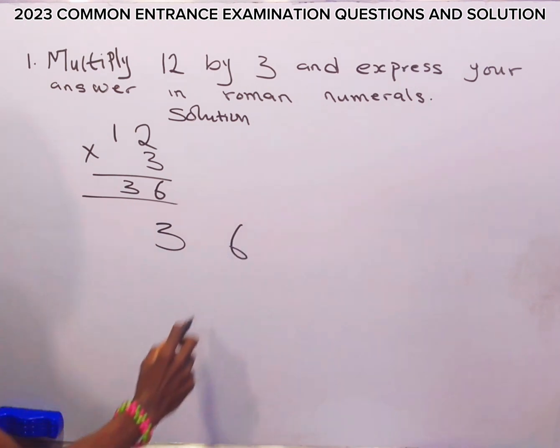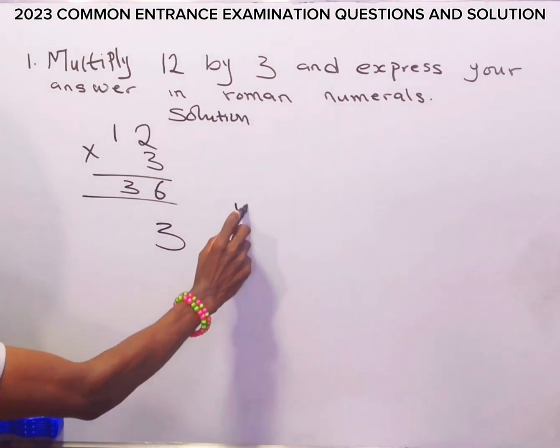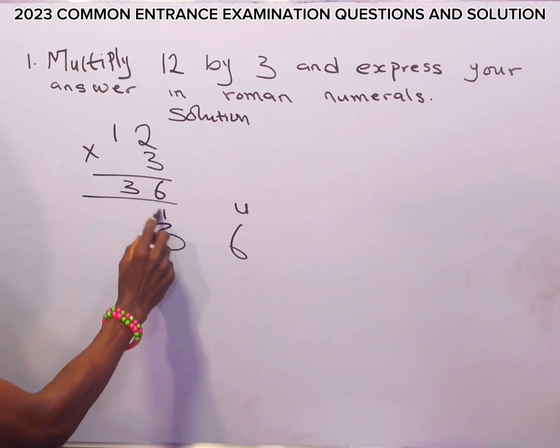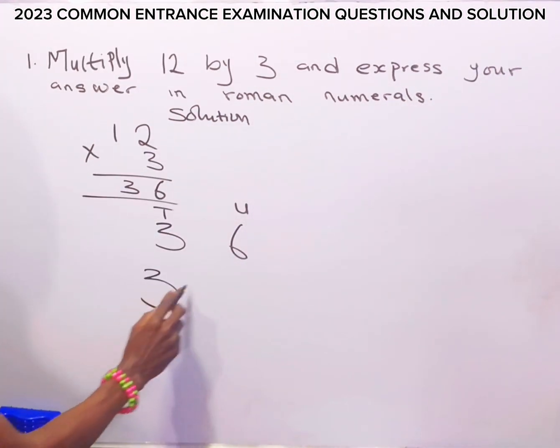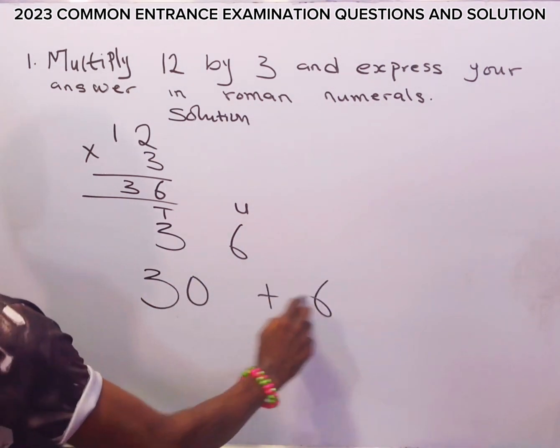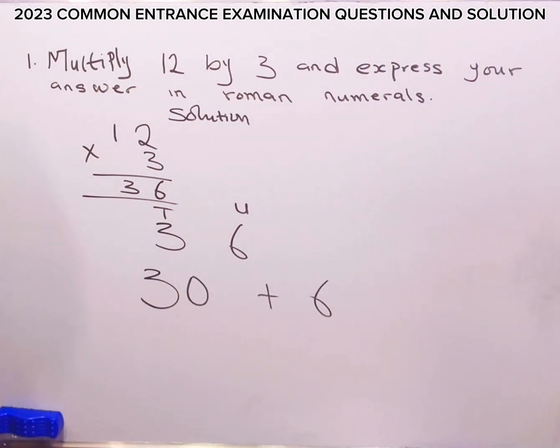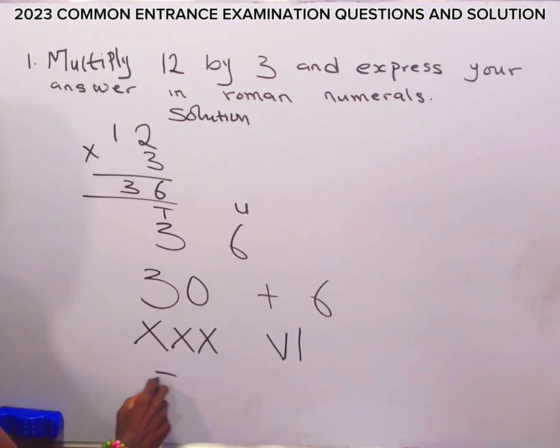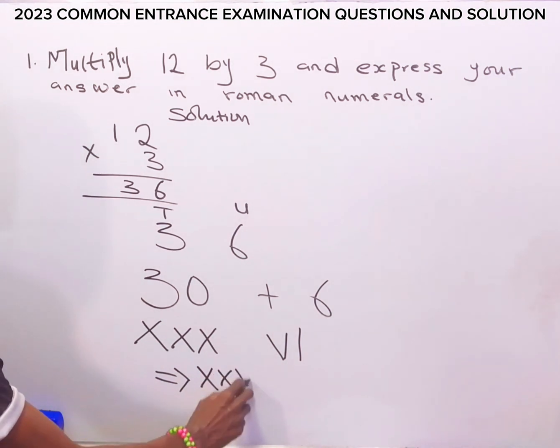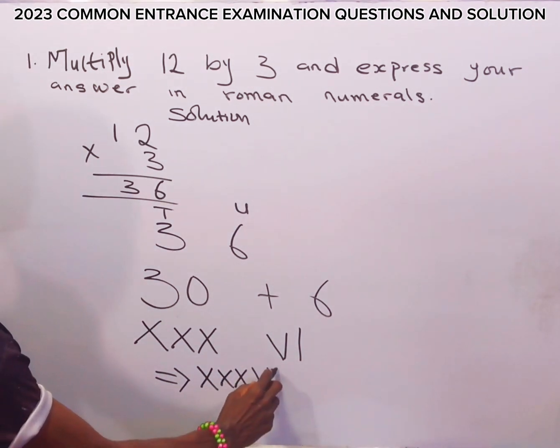Now to write this in Roman numerals, let's consider 36. The place value of 6 here is units and the place value of 3 here is tens. Therefore, for us to get 36, it is 30 plus 6. Now how do we express 30 in Roman numerals? 30 in Roman numeral is X, X, X and 6 in Roman numeral is V, I. So when we join these two together, we get XXXVI.